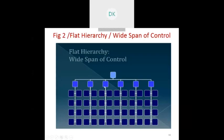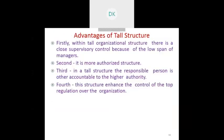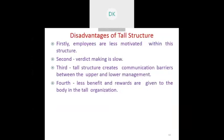In the tall hierarchy diagram, one manager controls two managers, each controlling two supervisors, and each supervisor controlling two employees. One person controls only a few people, hence it is called low span of control. In the flat hierarchy, also called wide span of control, one manager is divided into six divisional managers, and each manager controls eight people, making the span of control wider.